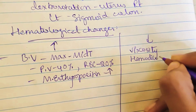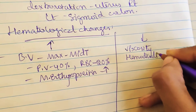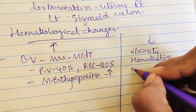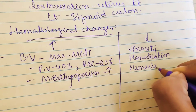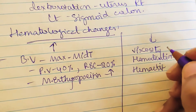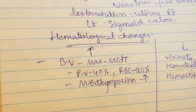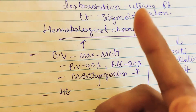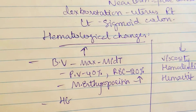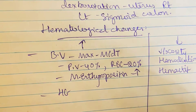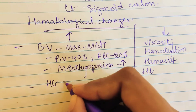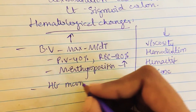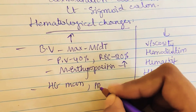What decreases: blood viscosity decreases, leading to hemodilution, which is a physiological anemia — hemoglobin should not be less than 11 grams. Hematocrit (packed cell volume) will also decrease. Hemoglobin mass increases — increasing oxygen-carrying capacity — but hemoglobin concentration decreases.